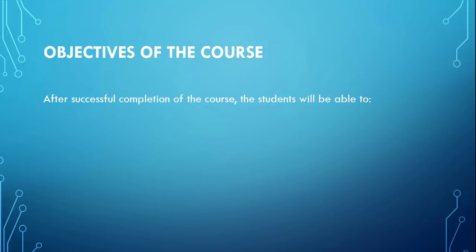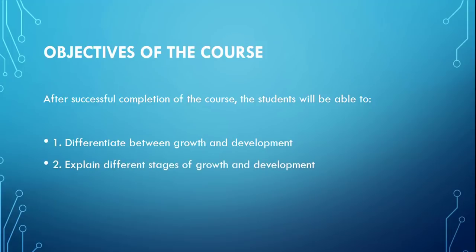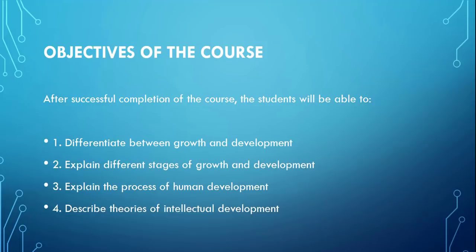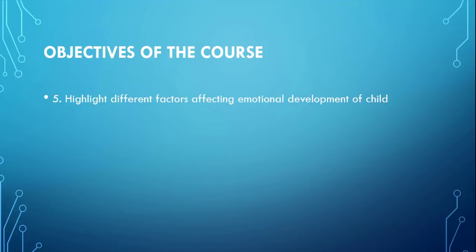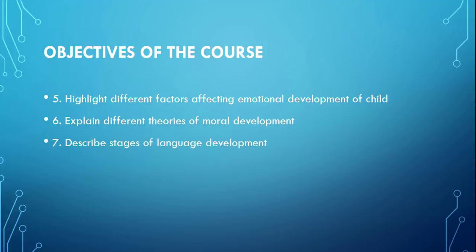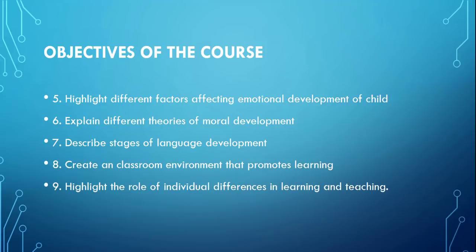Let me tell you the objectives of the course. After successful completion of the course, the students will be able to differentiate between growth and development. You will be able to explain different stages of growth and development, explain the process of human development, describe theories of intellectual development, highlight different factors affecting emotional development of a child, explain different theories of moral development, describe stages of language development, create a classroom environment that promotes learning, and highlight the role of individual differences in learning and teaching. So these were the course objectives.